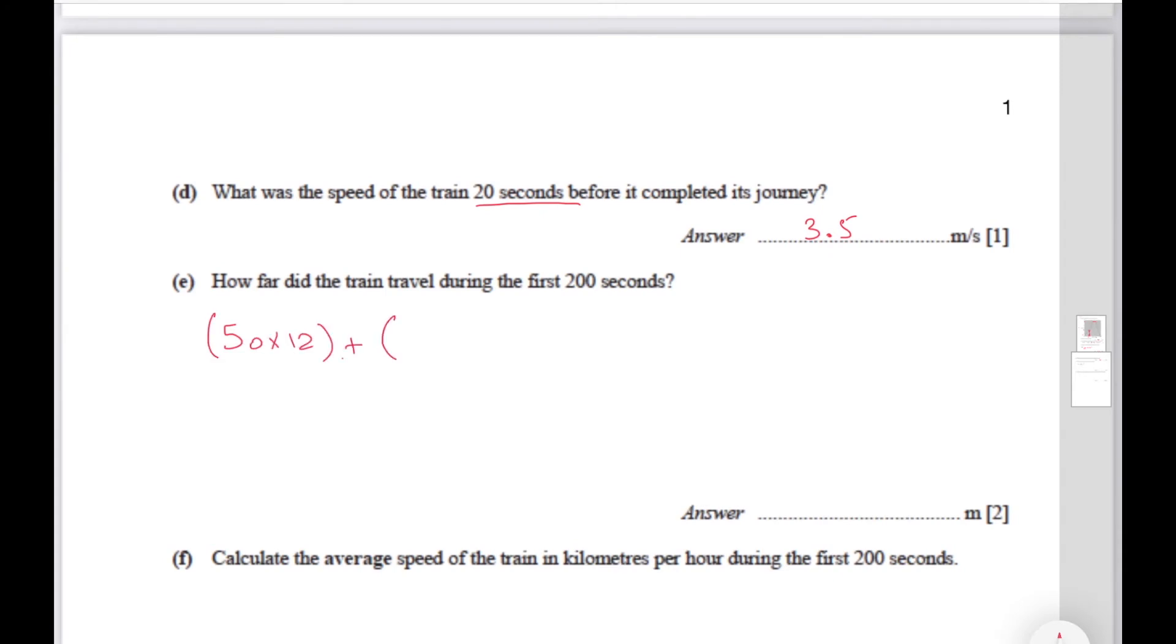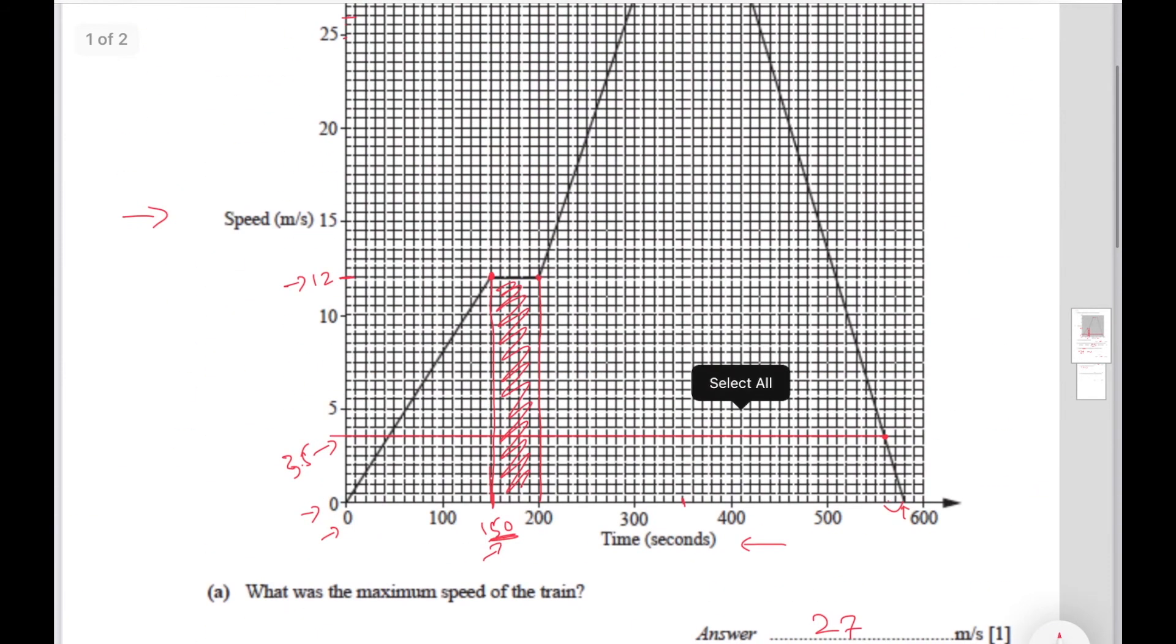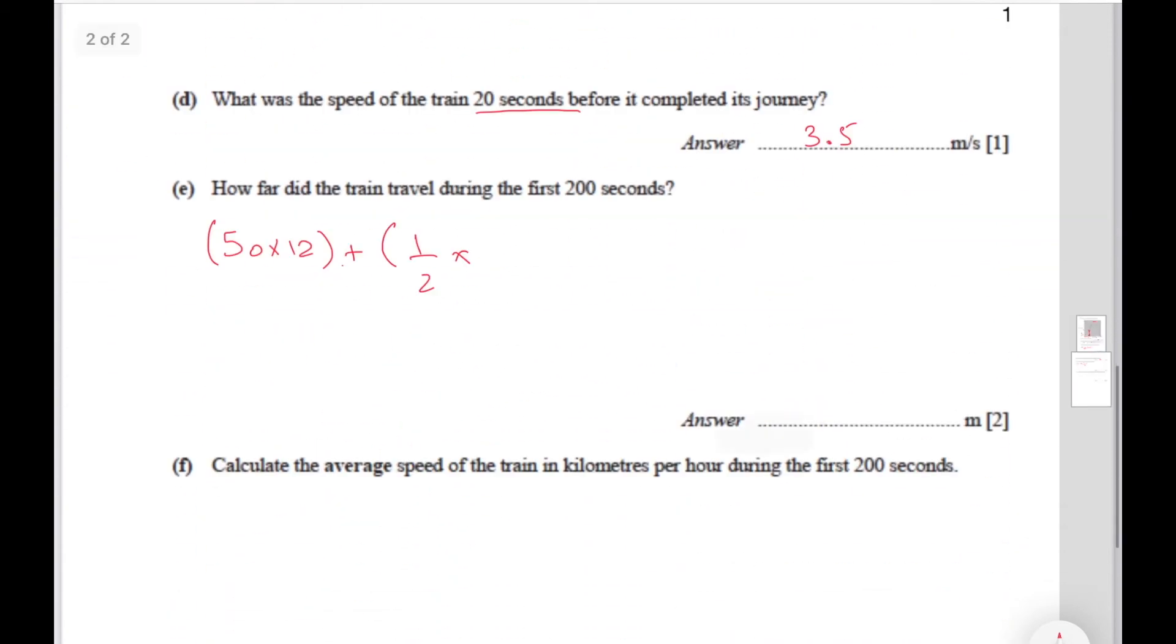And then you add the area of the triangle which is going to be half times base times height. The base is going to be all this distance covered which is 150, and the height is going to be 12. So you multiply half by 150 and by 12.